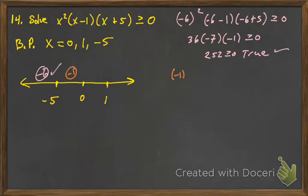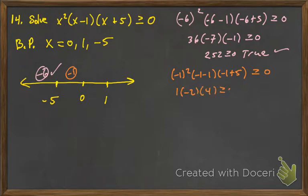We'll try negative 1: negative 1 squared times negative 1 minus 1 times negative 1 plus 5, greater than or equal to 0. That's going to end up being positive times negative times positive, so that's going to be negative — that is false. So we're going to throw out that middle interval.